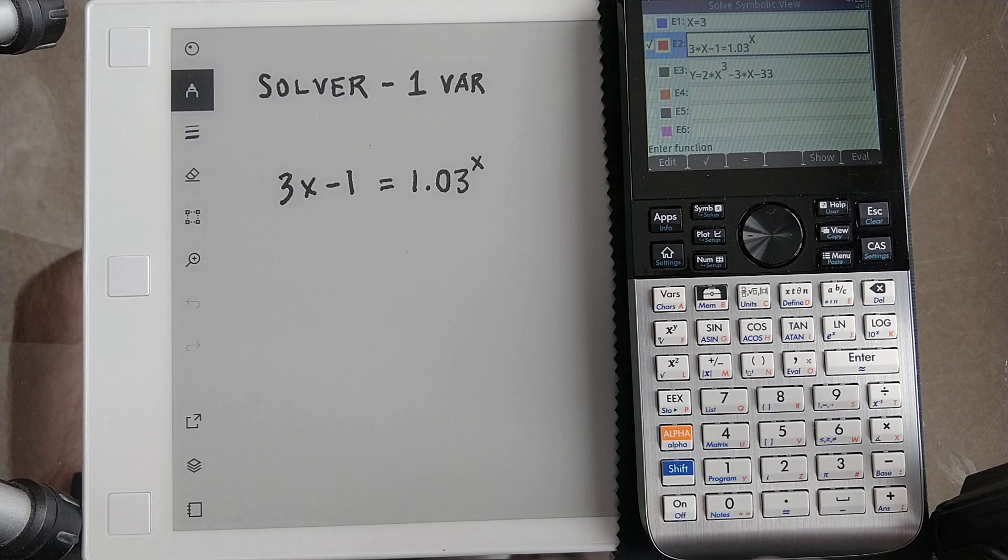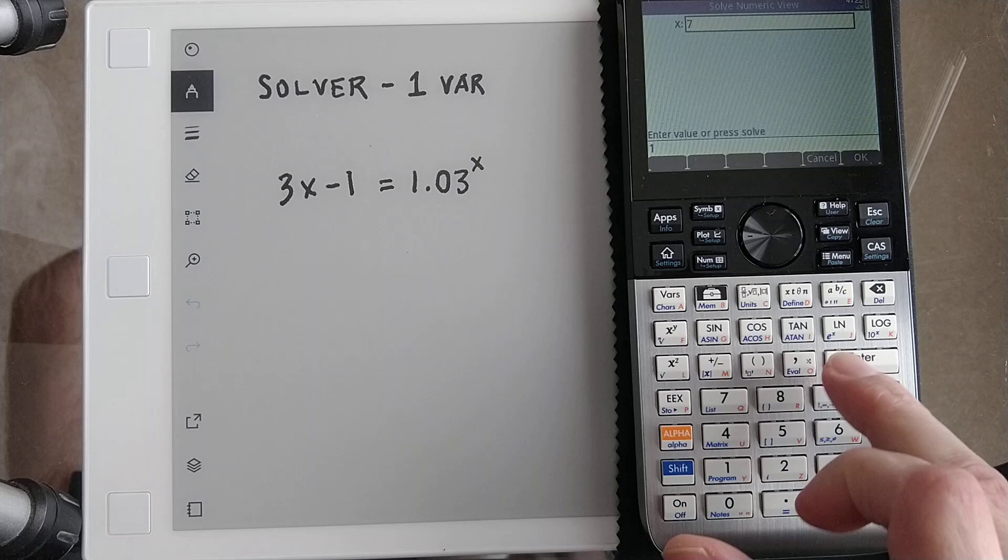And type a 1 in for X, since that's what we started with on the other one. And then I'm just going to hit the solve soft key, or it's really a touch screen. So hit solve here. And it gets our answer.